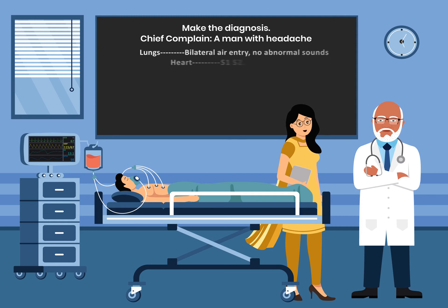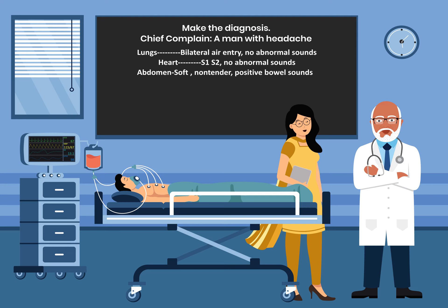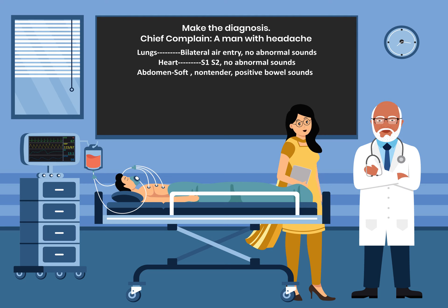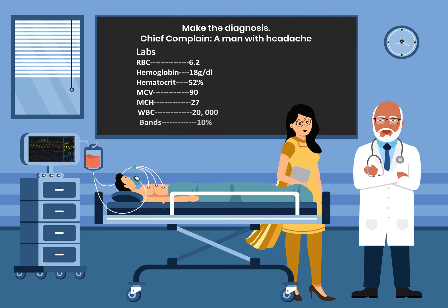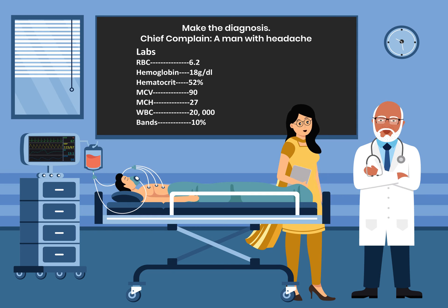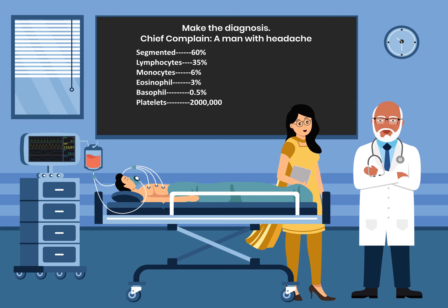On the neck, there is nuchal rigidity. The lungs show bilateral air entry with no abnormal sounds. The heart indicates S1 and S2 with no abnormal sounds. The abdomen is soft and non-tender with positive bowel sounds. Labs are significant for a WBC of 20,000 with a significant left shift; bands are 10%. The rest of the labs are normal.